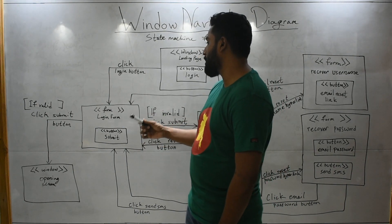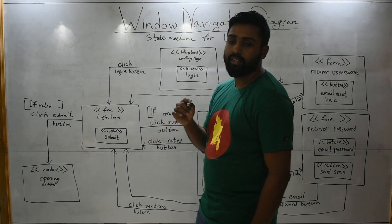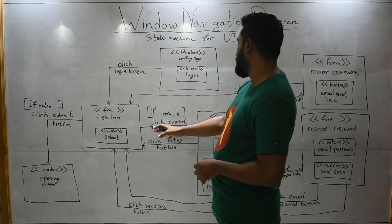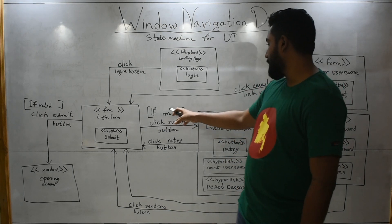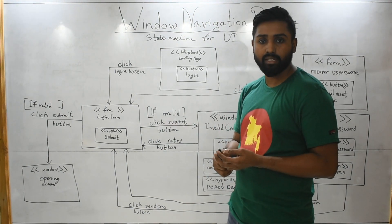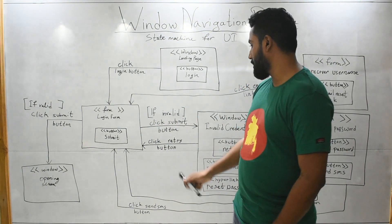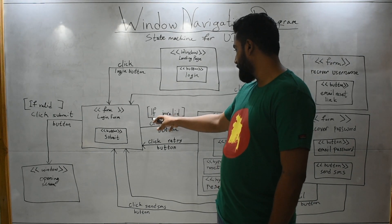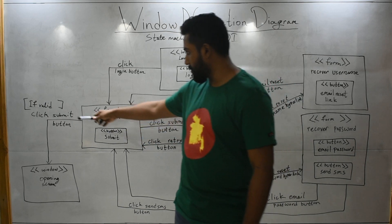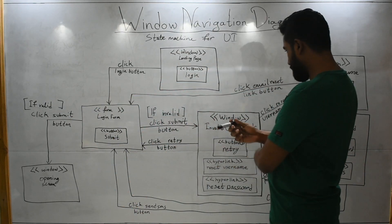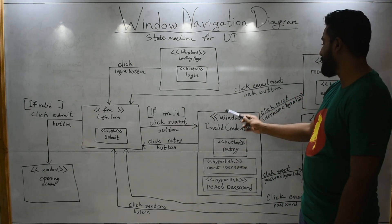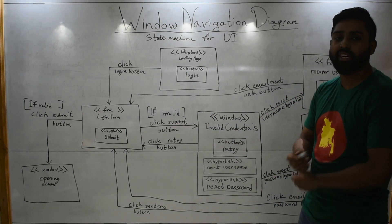If you did not enter the correct credentials — if you've given invalid credentials and then pressed submit — you follow another arrow with the guard condition 'if invalid', just like the 'if valid' condition on the other path. When you click the submit button with invalid credentials, you reach the invalid credentials window.